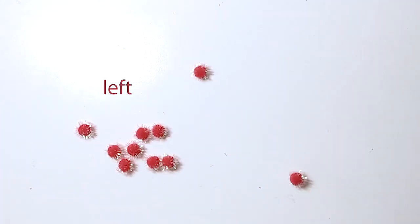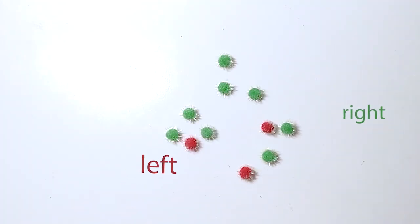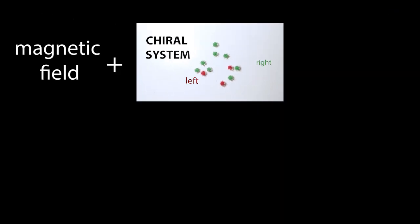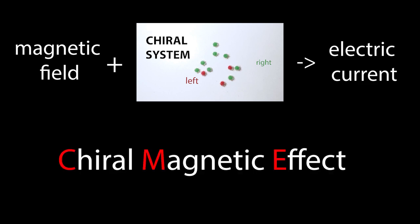If a system of particles has much more left-handed particles than right-handed particles or the other way around, it's called a chiral system. When a strong magnetic field is applied to a chiral system, it can create an electric current. This is called the chiral magnetic effect, or CME.